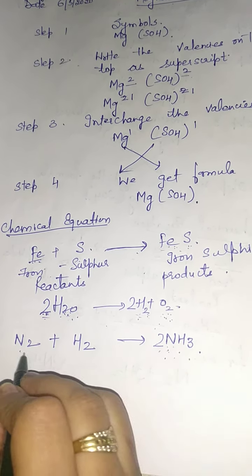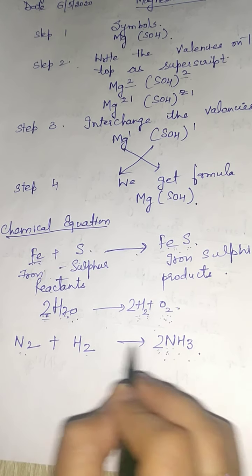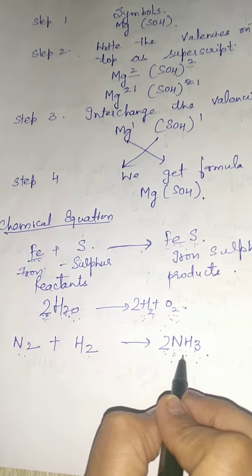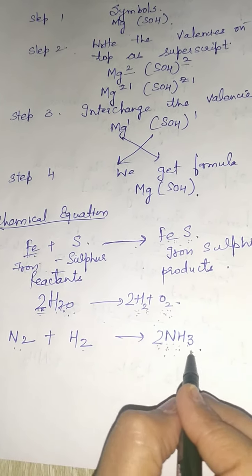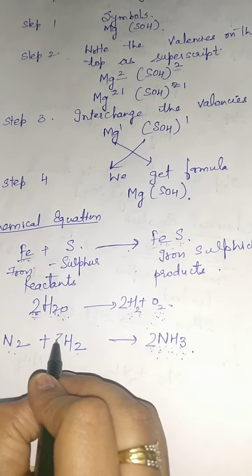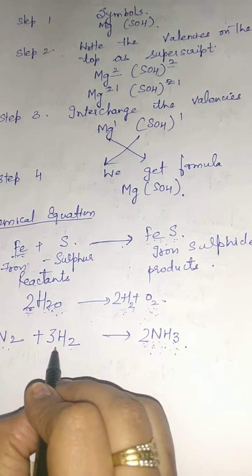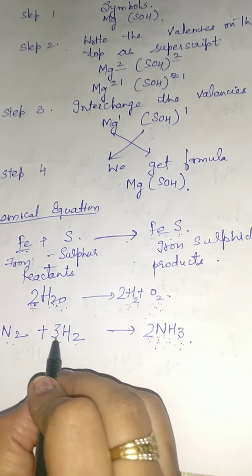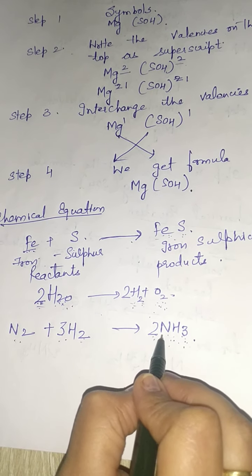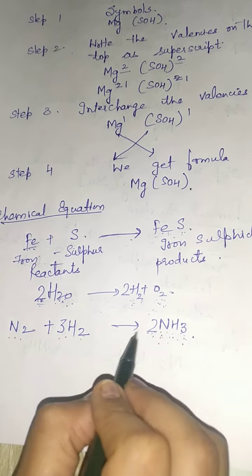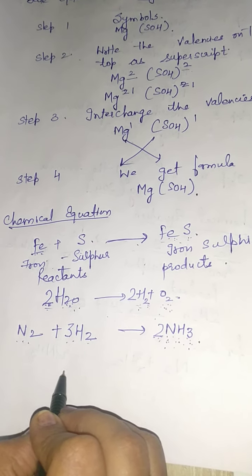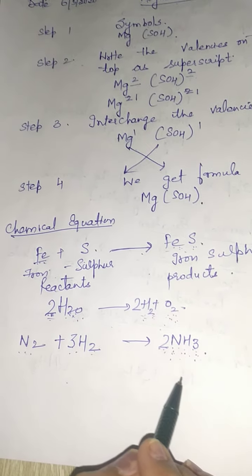Now the number of nitrogen atoms is the same on both sides. But the number of hydrogen atoms has increased on the product side to 6. To balance the hydrogen atoms, we will put 3 on the reactant side. Now the equation is balanced: hydrogen is 6 on both sides and nitrogen is 2 on both sides. That's all for today. This chapter is over and we will do question answers next.